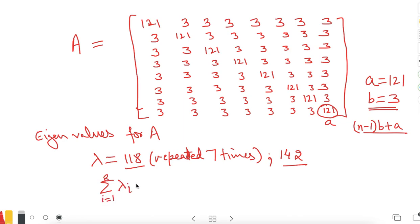So you can calculate what is the value of 118 times 7 plus 142, and you will find that this value is exactly 8 times 121. So the trace of A is clearly 8 times 121, and you can easily calculate this.